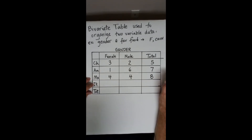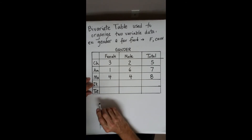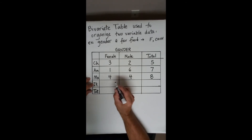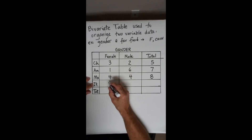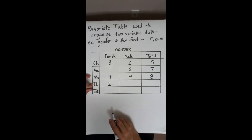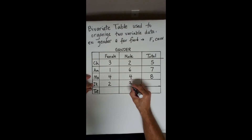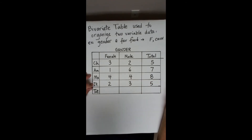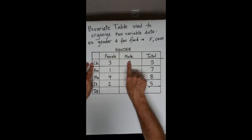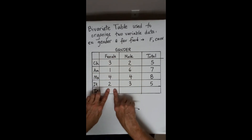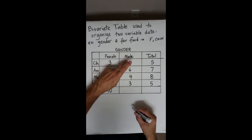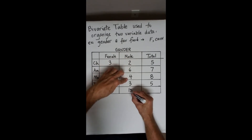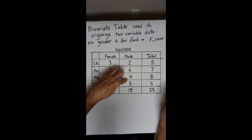For Italian food, two females and three males liked it, giving a total of five. Adding across the food favorites, the gender totals come to ten females and fifteen males, for a grand total of twenty-five people.